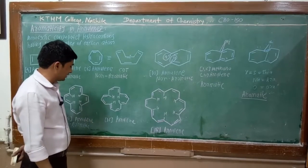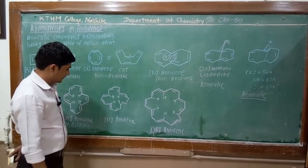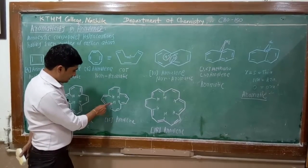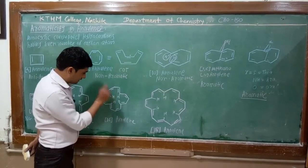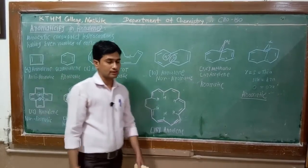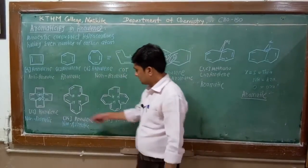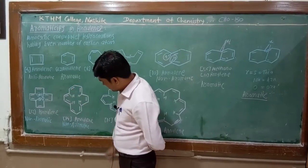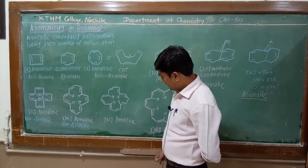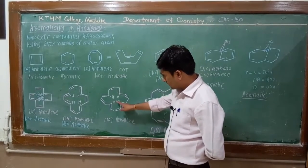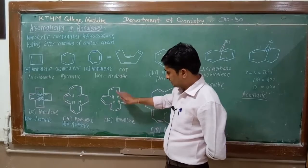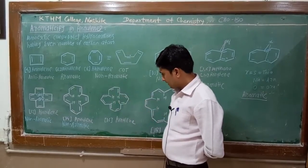In case of 16-annulin, as the carbon number increases the inner cavity is greater. Due to this larger inner cavity, these hydrogens are apart from each other. Therefore the transannular effect is very less, and hence this is a planar compound.